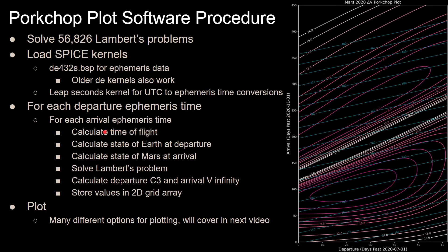As far as implementing this procedure in software, the first thing is that we have 56,826 Lambert's problems to solve. The first step would be to load in the spice kernels necessary to do this. You want to load a spice kernel to get the ephemeris data of Earth and Mars for the given time windows in 2020. In this case, I used DE432, but there's other DE kernels like DE430 that you could also use. I also needed to load in a leap seconds kernel to do the conversions between UTC and ephemeris time.